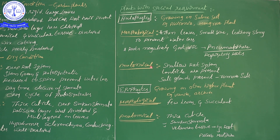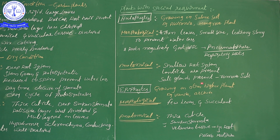Anatomical adaptations of halophytes: shallow root system, lenticels present on the stem (acting like stomatas for respiration), and salt glands are present. Salt glands remove excessive salt absorbed from the saline soil, preventing side effects to the plant. Summary: halophyte morphological adaptations — small, thin, leathery leaves; negatively geotropic pneumatophore/respiratory roots. Anatomical — shallow roots, lenticels on stem, salt glands.